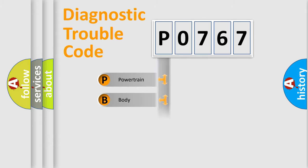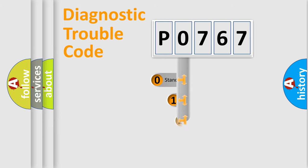We divide the electric system of the automobile into four basic units: Powertrain, Body, Chassis, and Network. This distribution is defined in the first character of the code.